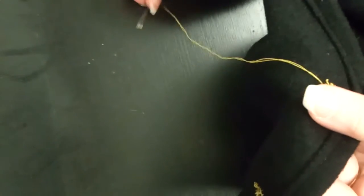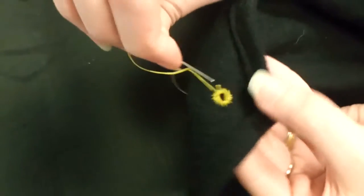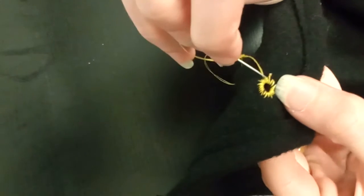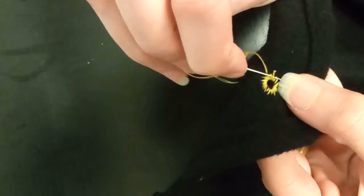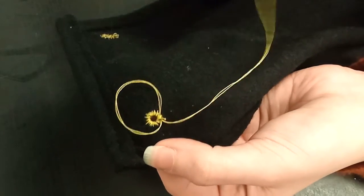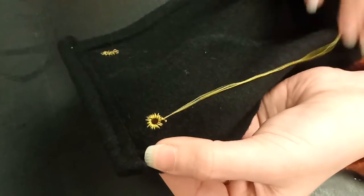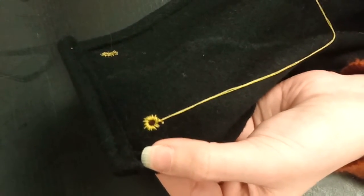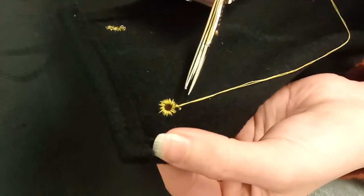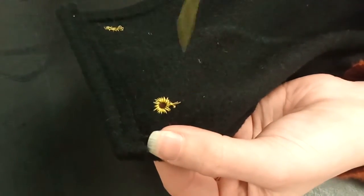Grab your needle and we're just going to thread it through all the stitching that we've done. We're not going to go through the material. Just thread it through the stitching and do that all the way around. And then we're just going to tie it off. Give it a snip. And you're done.